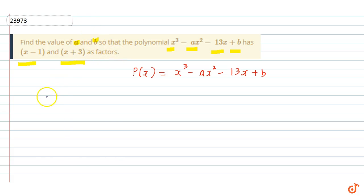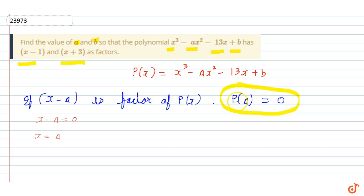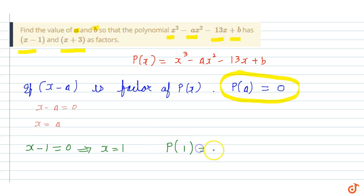So by the factor theorem, if x minus a is a factor of p(x), then p(a) = 0. Since x minus 1 is a factor, we set x minus 1 equal to 0, giving x equal to 1. Therefore p(1) must equal 0.